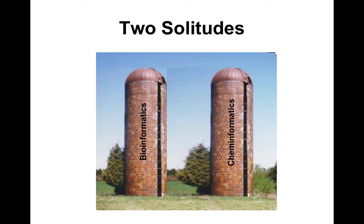What we're doing in metabolomics is a mix of both bioinformatics and something called cheminformatics. Bioinformatics is about biological data. Cheminformatics is about chemical data, like metabolites. But because metabolites are also connected to other parts of biology — the proteome, the genome, the transcriptome — it connects pretty well to bioinformatics as well.